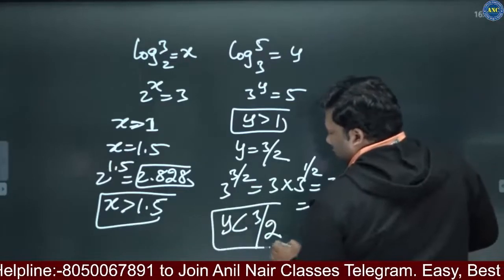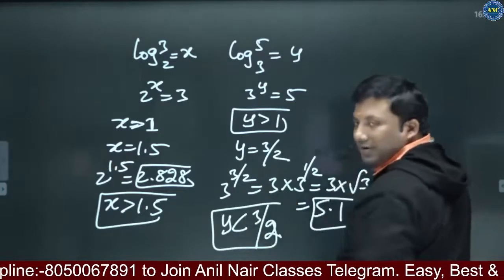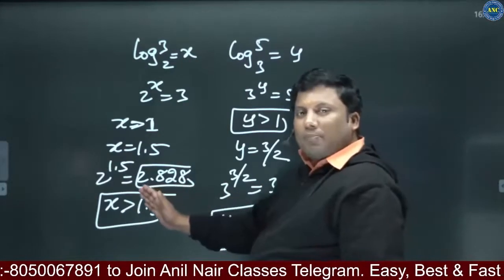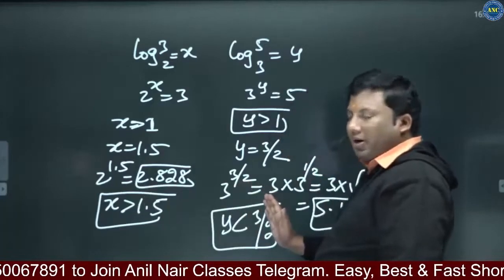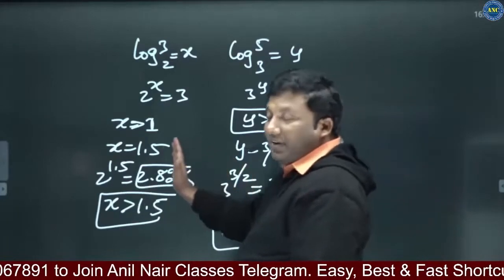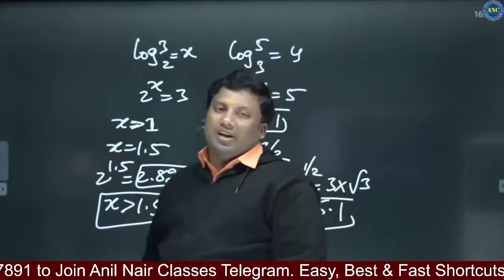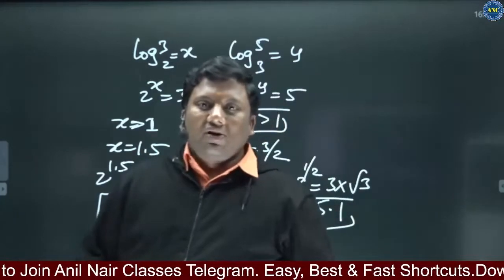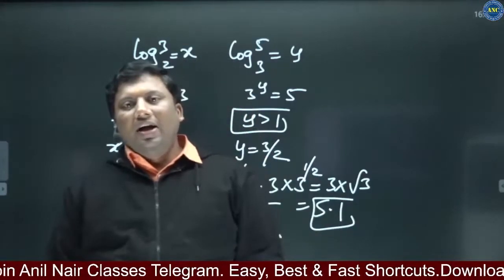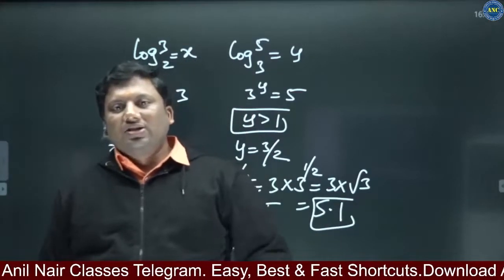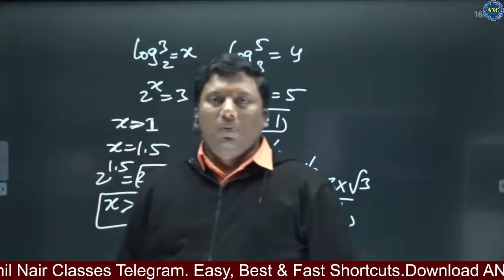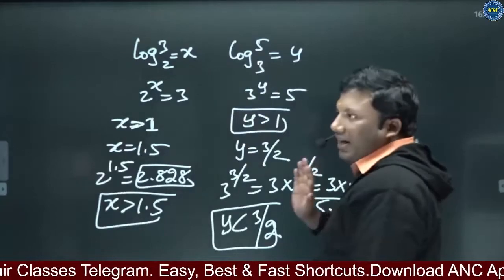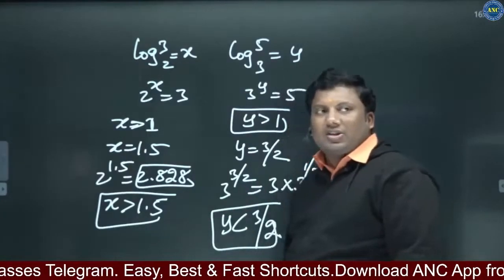Using this exponential approach: x is greater than 1.5 and y is less than 1.5. So obviously log 3 base 2 is greater than log 5 base 3. I hope the idea is very clear to you.